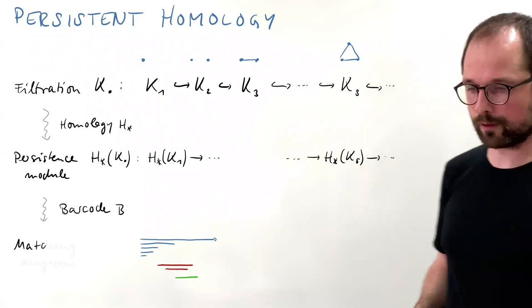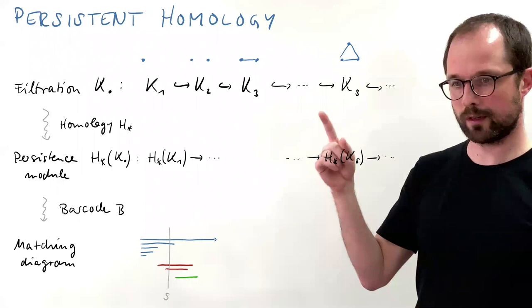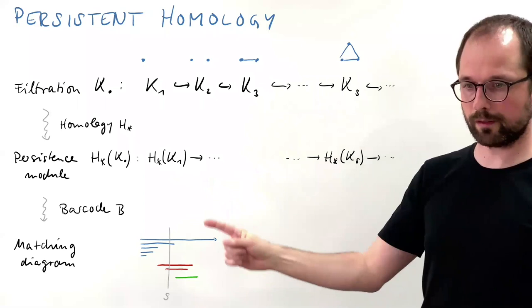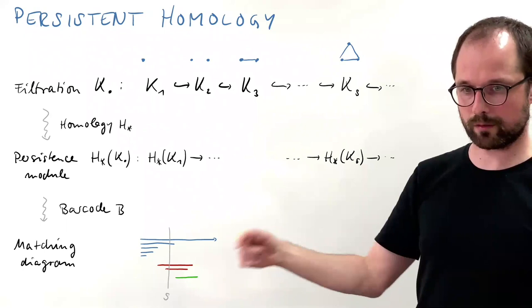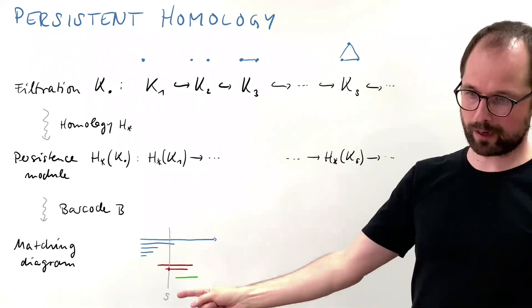Here is the first occurrence of the word 'matching.' The barcode can be interpreted as a diagram indexed over the reals, just as the filtration was a diagram of simplicial complexes and the persistence module was a diagram of vector spaces. We can consider this as a diagram in the category that has sets as objects and matchings — partial bijections — as morphisms. For each filtration parameter s, you take one element in the set for each interval you hit, and the matching connects those pairs according to their common interval.